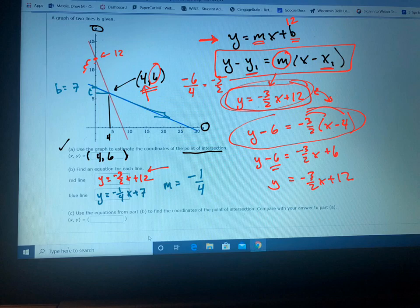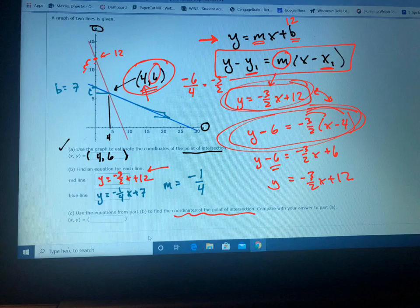Now it says use the equations from part B to find the coordinates of the point of intersection. That's a little circular in nature because if we had used that point for the point slope form, then we would, you know, in order... The reason that's a little bit tricky is because we assumed that this point was correct and we used it to find our slope.